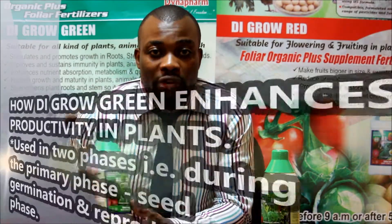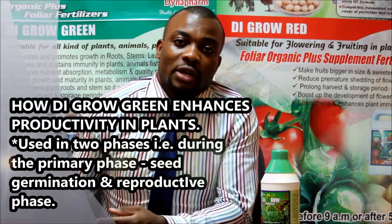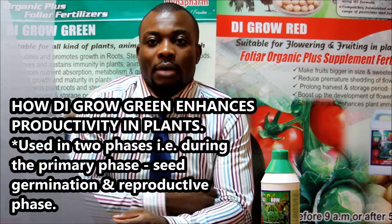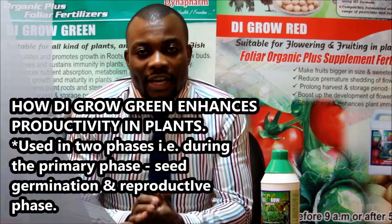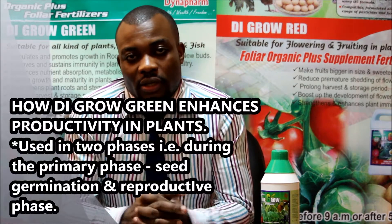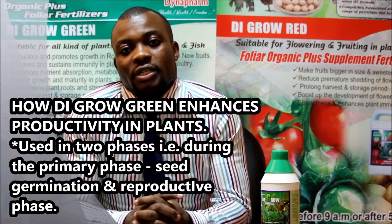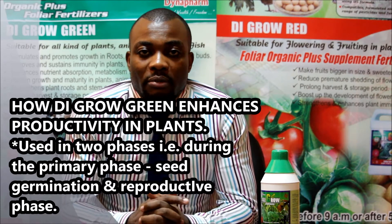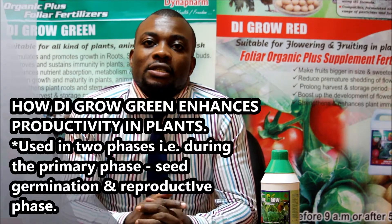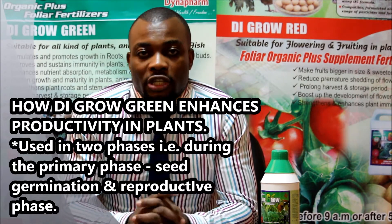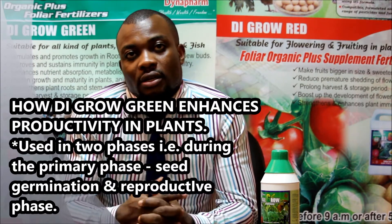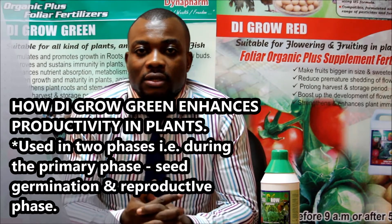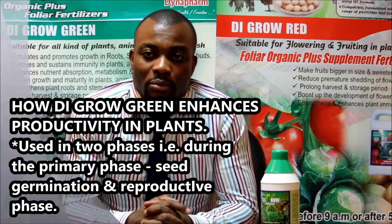How does Diego green enhance productivity in plants? Number one, it's used in two phases of plant growth: during the primary phase, that is during seed germination, and during the reproductive phase of a crop.